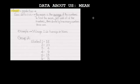What is mean? The mean is the average of the numbers. To find the mean, you just add all the numbers, then divide by how many numbers there are.